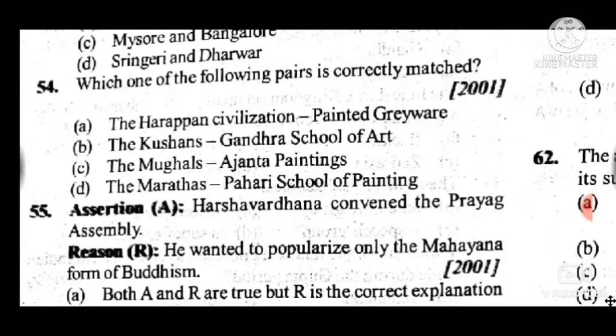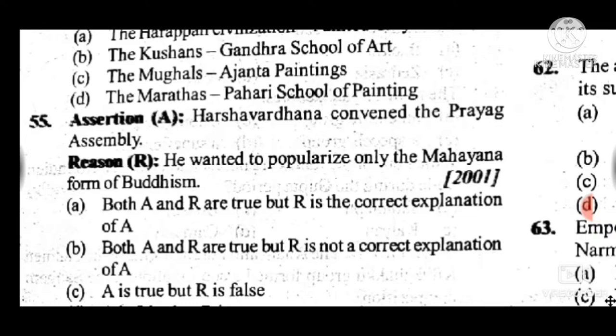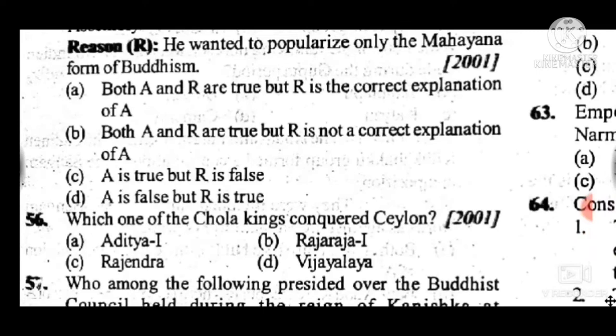Question 55: Harsha Vardhana convened the Prayag assembly; he wanted to popularize only Mahayana Buddhism. Answer is B — both A and R are correct but R is not the correct explanation of A. Question 56: Which one of the Chola kings conquered Ceylon? Answer is C, Rajendra.